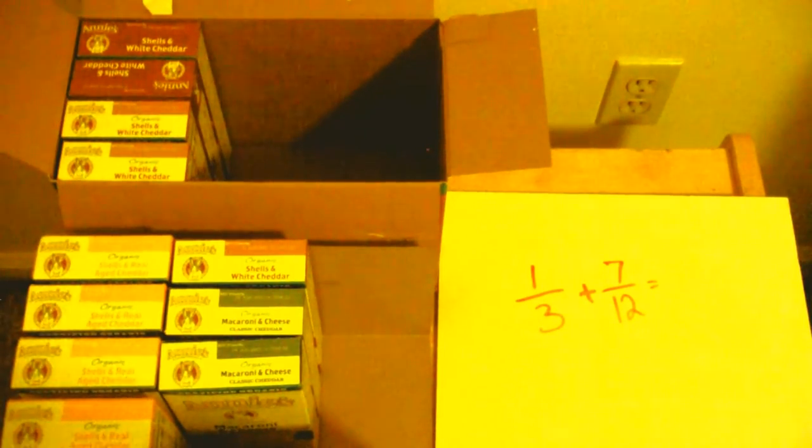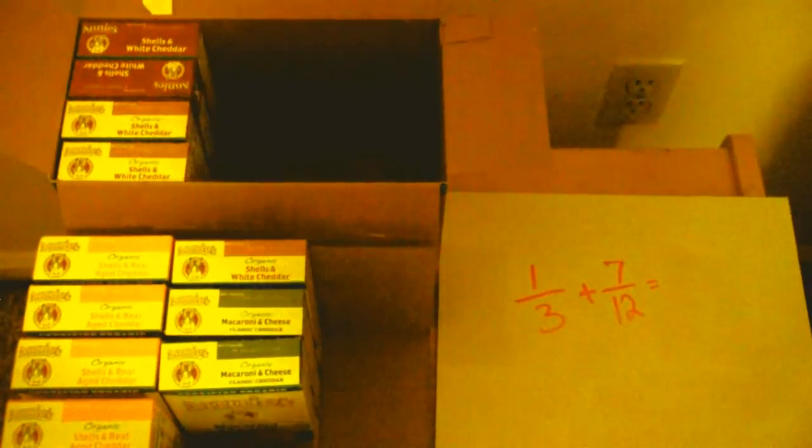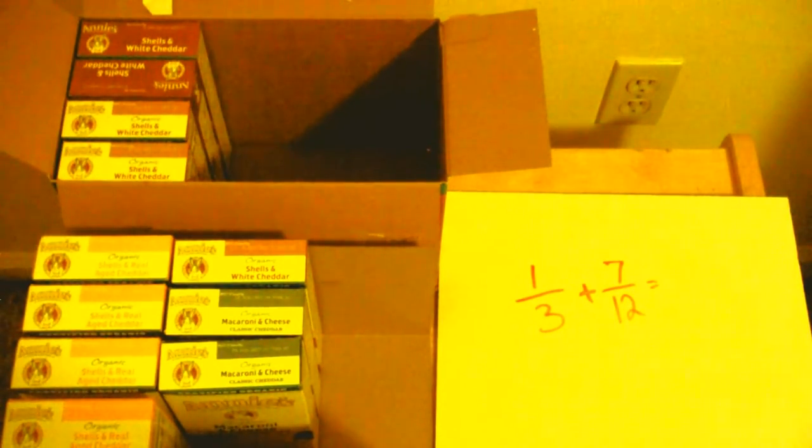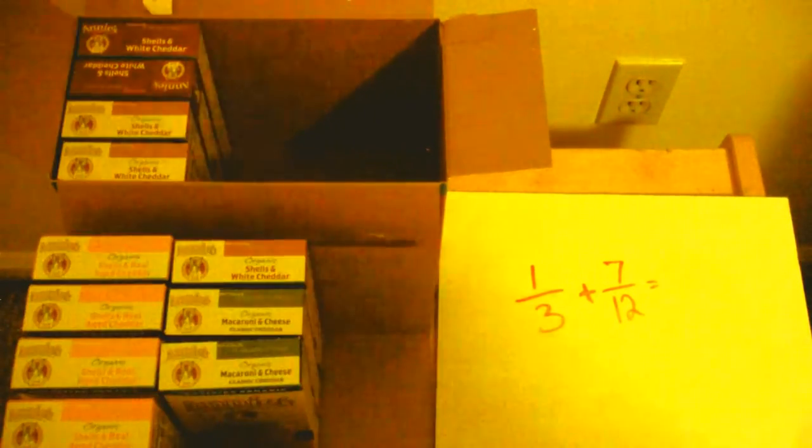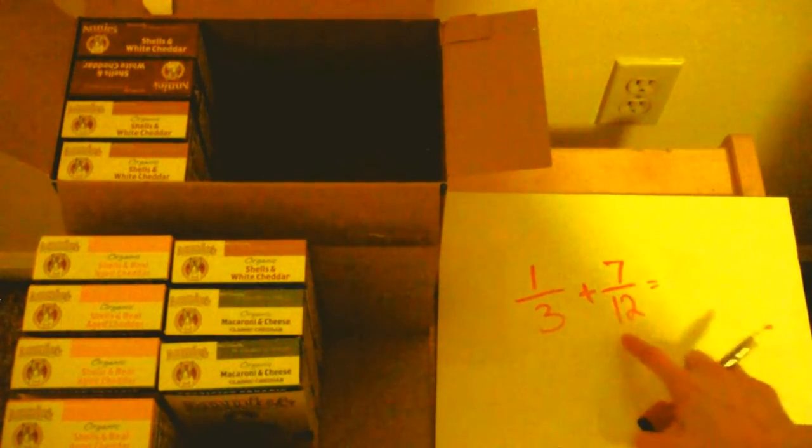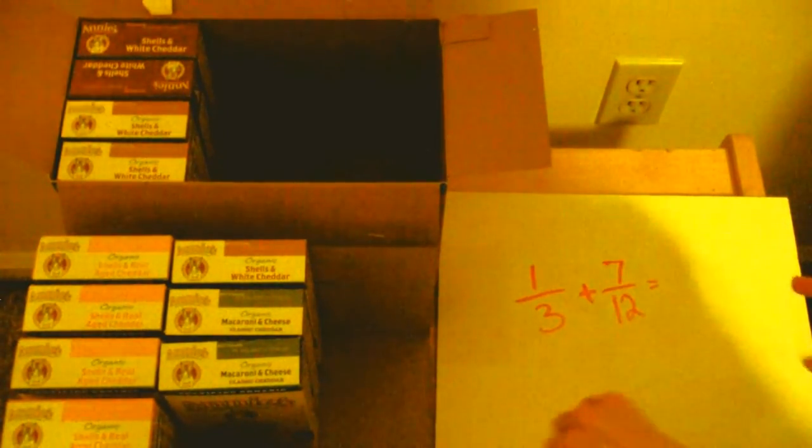So how can I do that? I have to find a common denominator. So you have to think of equivalent fractions of one-third and seven twelfths and see which ones you can use to make it work. So let's see here. I know that if I multiply three by four I could get to twelve. So why don't I do that?